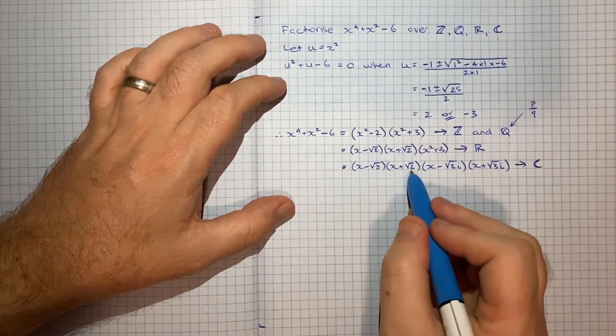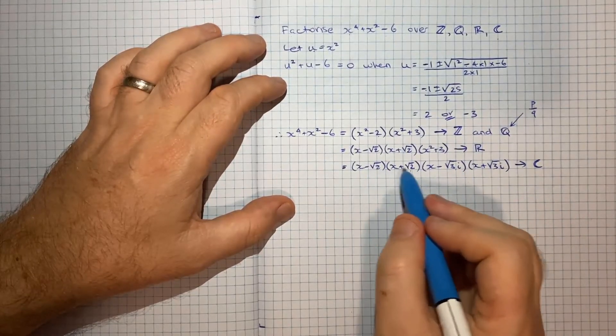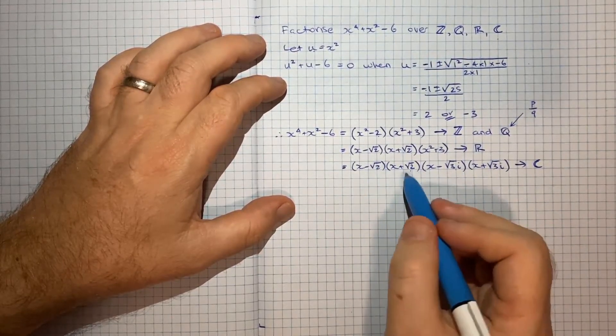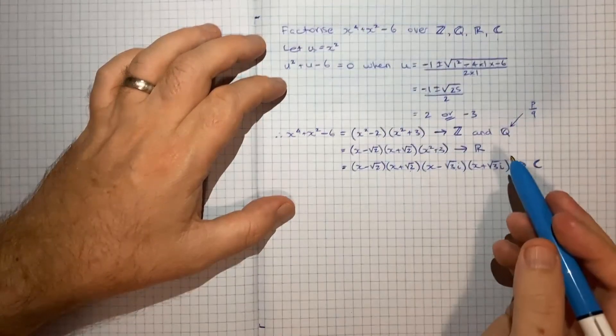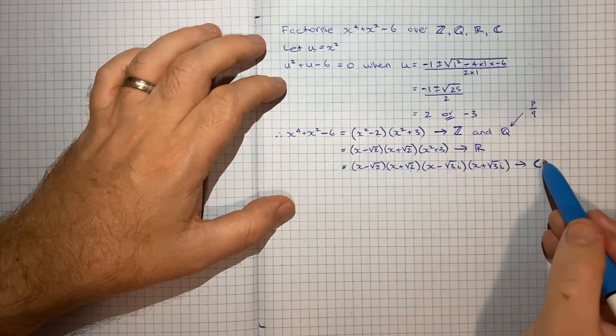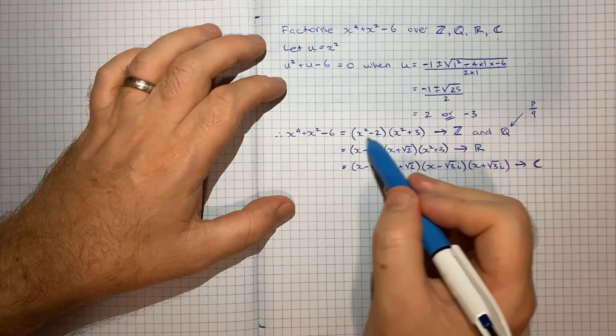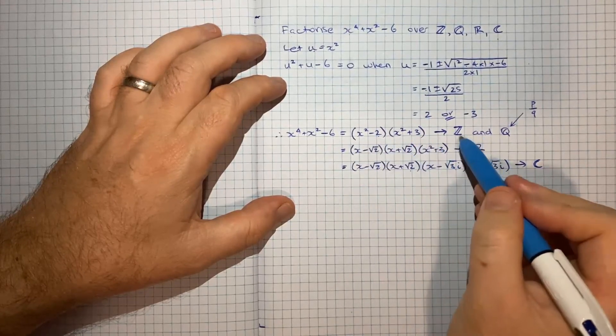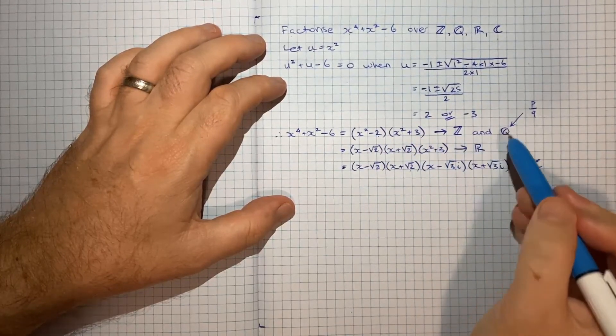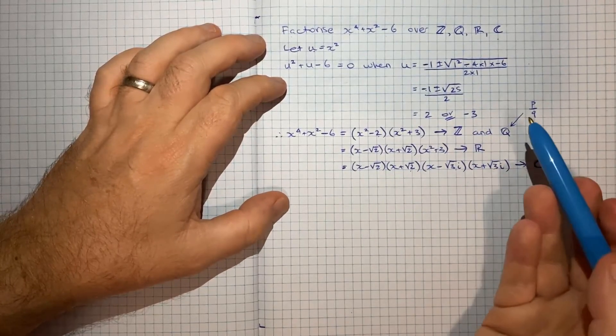And again, all of these numbers can be thought of as technically complex numbers, but the plus and minus root 2 just simply have a 0 in front of the i. So this covers the complex set. This covers the real set. And I think this first factorization covers both the integer and the rational set. So I think that's it for this question.